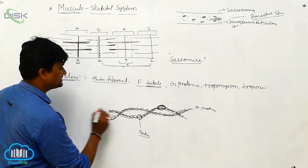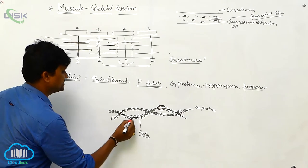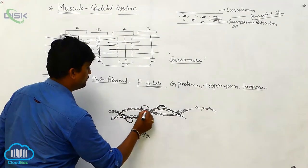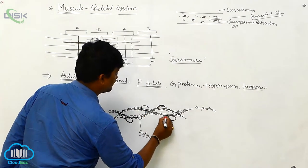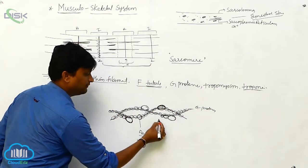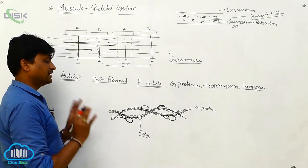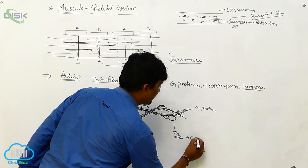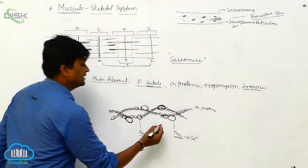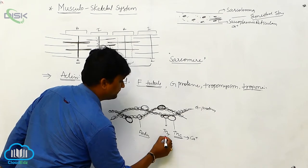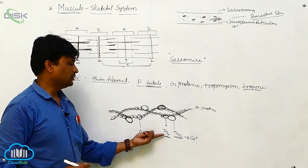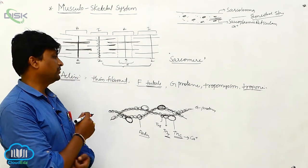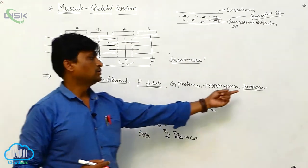Alternatively arranged on the actin filament are three subunits of troponin. These three subunits consist of a big unit and smaller units alternating. Troponin consists of three subunits: TnC — which means troponin calcium binding center or calcium binding protein; TnT — which means the tropomyosin binding center; and TnI — which means troponin inhibitory center or troponin inhibitor protein.